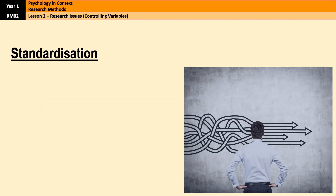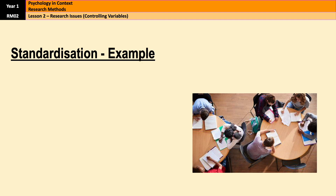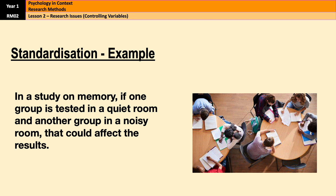A second way of dealing with unwanted variables is standardisation — keeping the procedure exactly the same for all participants, with the exception of the manipulation of the IV. By standardising procedures, researchers can ensure that extraneous variables are controlled and the results are more reliable and valid. For example, in a study on memory, if one group is tested in a quiet room and another in a noisy room, that could affect the results. But if both groups are tested in the same room under the same conditions, we can be more confident that any differences in memory performance are due to the manipulation of the IV — the location of the research has been standardised.